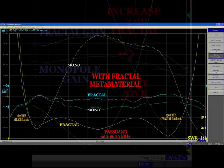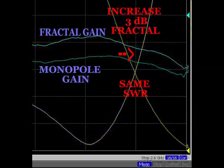Here's a blow-up of the upper section of the passband where the second harmonic kicks in for the monopole alone. Here, the SWRs are identical, but the fractal metamaterial slip-on collar has a 3 dB increase over the monopole.